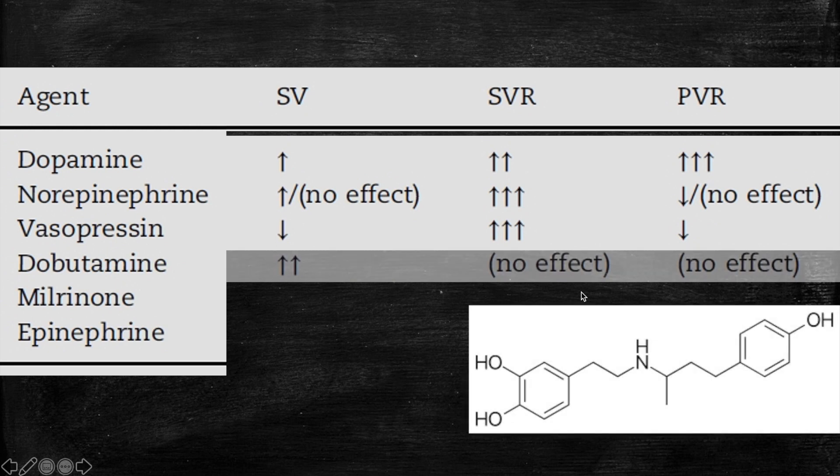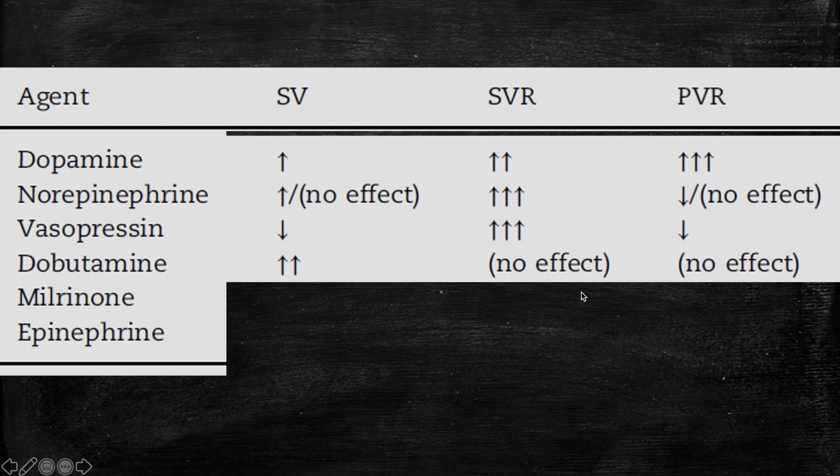Next agent would be dobutamine which mainly works to increase the contractility of the heart. So if you have RV dysfunction, for example, in context of myocarditis or severe RV dysfunction because of the HIE or because of severe pulmonary hypertension, dobutamine is a useful agent in this case as it will increase the contractility. It doesn't have that much effect on the SVR, neither the PVR.